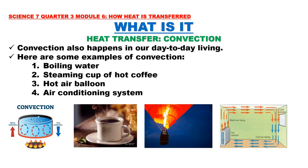Convection also happens in our day-to-day living. Here are some examples of convection: Number 1, boiling water. 2, a steaming cup of hot coffee. 3, a hot air balloon. And 4, an air conditioning system.